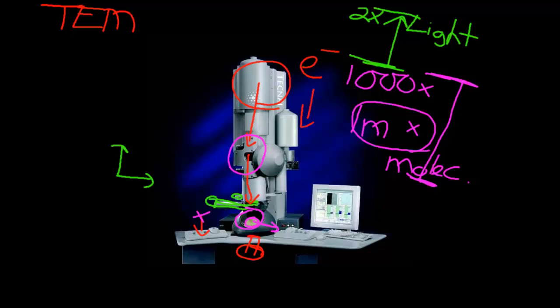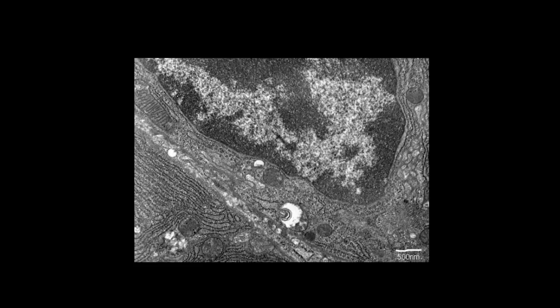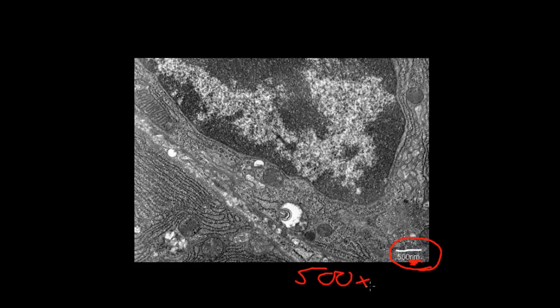So this is what a transmission electron microscope looks like and how it basically operates. Here's a classic image of an electron micrograph taken by a TEM. The first thing to notice is that they are very thin slices of tissue, so you don't see any three dimensions. Also, they're black and white, or shades of grey, depending on the amount of electrons absorbed. Always look for a scale bar — in this case the scale bar is measured in nanometres: this line represents 500 times 10 to the minus 9 metres, so this is a relatively high magnification.